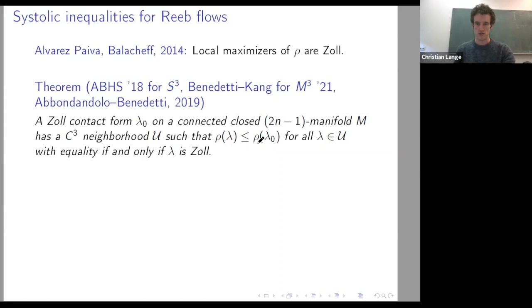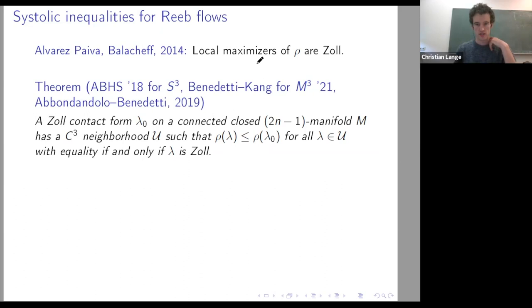Conversely, these contact one-forms are actually local maximizers. This was started by Abbondandolo, Bramham, Hryniewicz, and Salomão who showed this for S³ — that any Zoll contact form has a C³ neighborhood where any contact form in this neighborhood satisfies the inequality with equality if and only if it is Zoll. Later, Gabriele Benedetti and Jungsoo Kang generalized it to three-manifolds using the Calabi invariant and surfaces of sections.